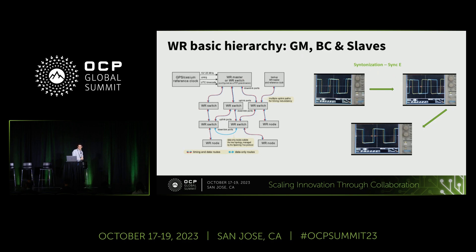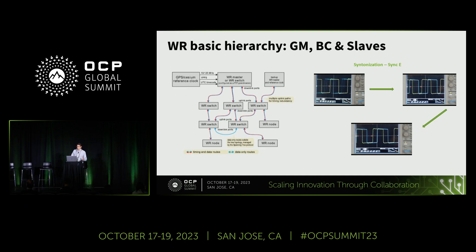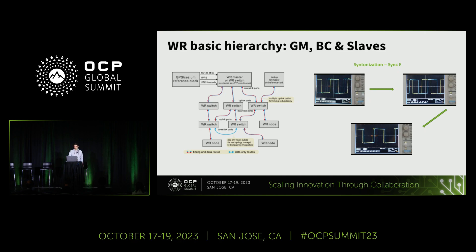We use Ethernet as the basis for this time synchronization protocol. Typically, we deploy in a topology with a reference — an atomic clock or a GNSS time server — feeding into the White Rabbit network, then distributing to all the different White Rabbit nodes across the deployment. Ethernet exchanges classical information continuously, allowing us to generate copies of the reference clock at each node in the network.